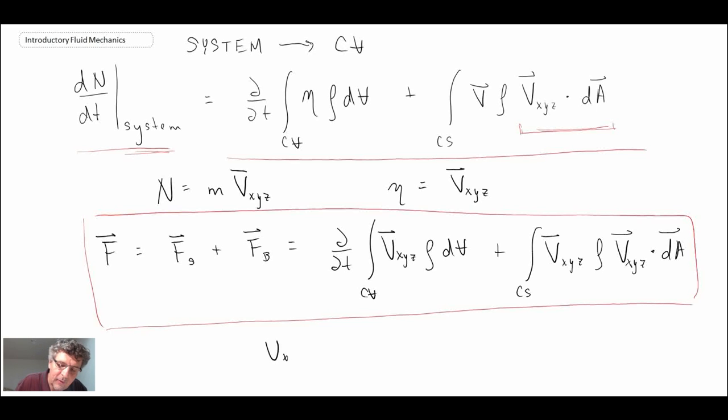But in this equation, V X Y Z in vector is the velocity with respect to the control volume. So that is the thing that you have to be careful with. But if you do that, you can then go ahead and solve problems involving linearly moving at a constant velocity control volume.